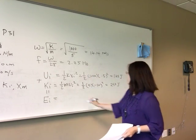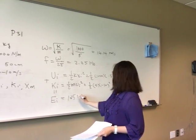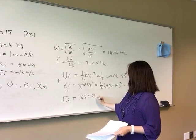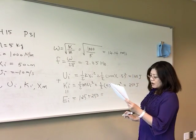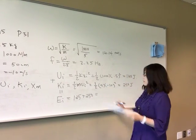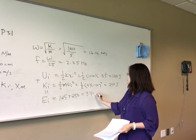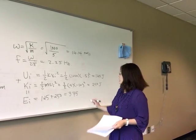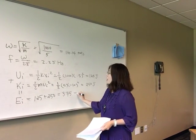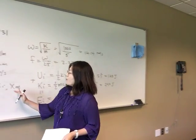Adding the potential and kinetic energies together — 125 plus 250 — gives a total energy of 375 joules. This is the total energy of the system to begin with, and we are now asked to find the amplitude.